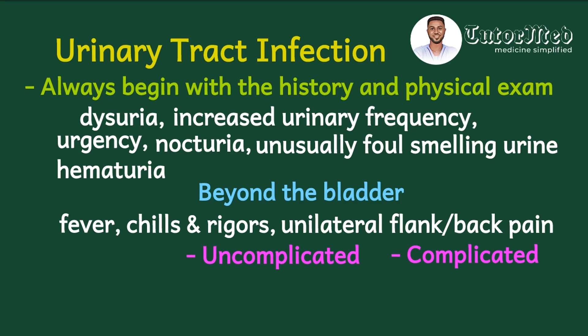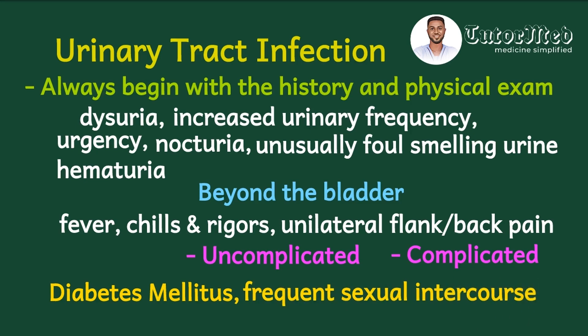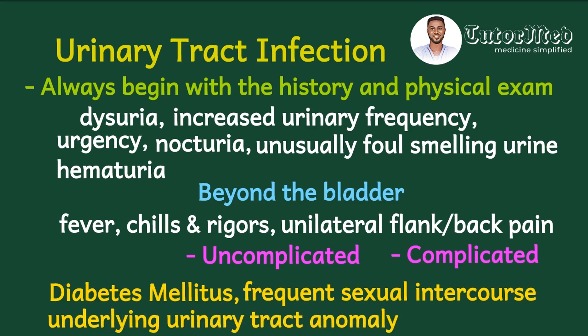In the history, look for risk factors for UTI, including poorly controlled diabetes mellitus — particularly significant for women, as there is insufficient data to suggest the same risk in men. Among young female patients, frequent sexual intercourse is a risk factor. In men, an underlying urinary tract anatomical anomaly such as a urethral stricture, BPH, or obstructive pathology may predispose to UTI.